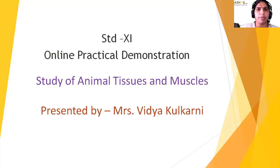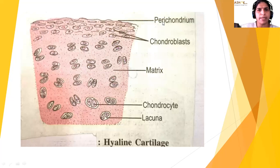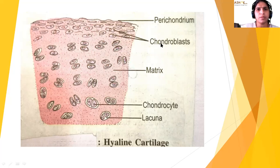First one: TS of hyaline cartilage. Carefully observe this diagram. The outermost layer is called the perichondrium, which is the outermost protective covering of cartilage. The perichondrium is made up of white fibrous tissues and blood cells. The chondroplast is the perichondrium-forming cells, present in fluid-filled spaces. These spaces are known as lacunae.